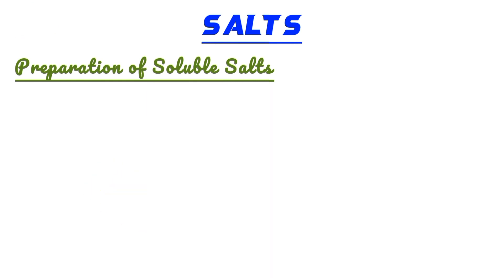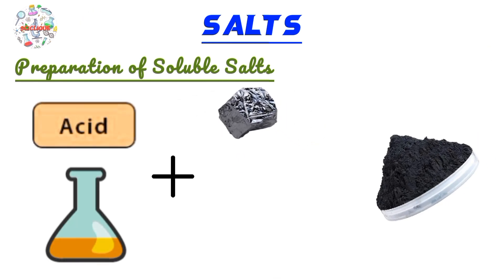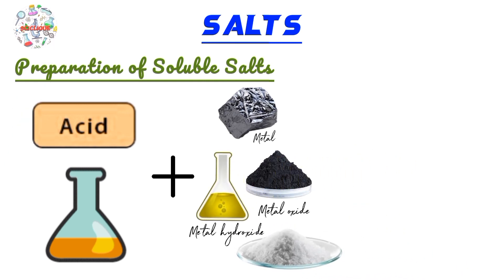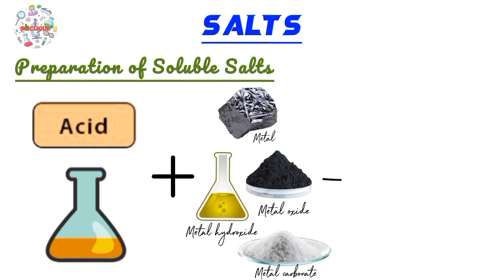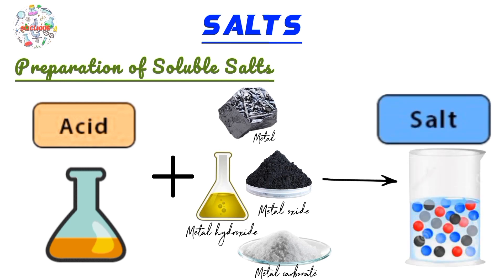If you want to prepare soluble salts, you're going to need, in most cases, an acid. You can either use a metal, a metal oxide, a metal hydroxide, or a metal carbonate. A metal carbonate is simply a carbonate of a metal, such as potassium carbonate or lead carbonate. Similarly, a metal hydroxide is a hydroxide of a metal, such as calcium hydroxide. You can use any of these four with a respective acid to form a soluble salt.